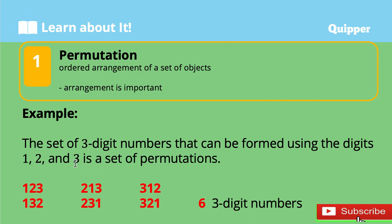If we are to find the three-digit numbers using the digits 1, 2, 3, the permutations are: 1-2-3, 1-3-2, 2-1-3, 2-3-1, 3-1-2, and 3-2-1. There are six three-digit numbers that can be formed using the digits 1, 2, and 3, and that is the number of permutations for 1, 2, 3.